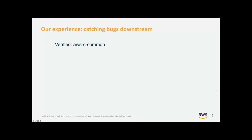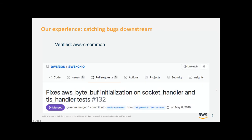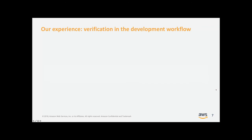We can also catch bugs downstream, providing value not only to the code we verify but to the consumers of that code. We verified AWS C Common, put these assertions in, and AWS-CIO started failing its unit tests. It turned out it was making calls into the byte buffer that violated the new agreement of how the byte buffer ought to be used. Following our model, we fixed AWS-CIO — you can see it's been merged. We actually help the development team because they've formed a precise contract and enforced it with assertions, so they know their downstream users are also acting in a memory-safe way.